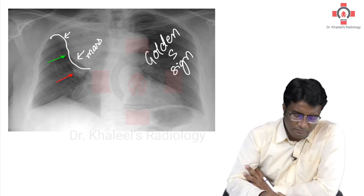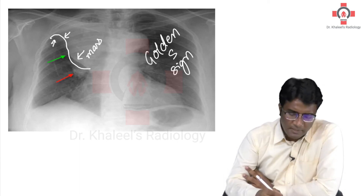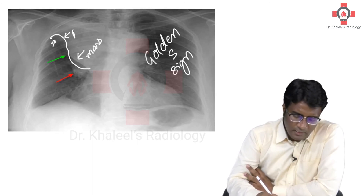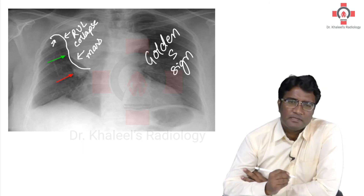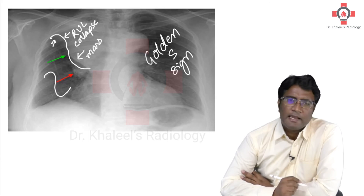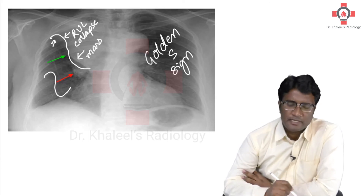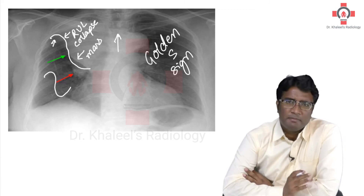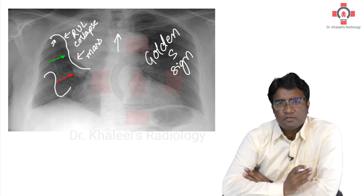The fissure also got lifted up. So you have this concave upward part because of the right upper lobe atelectasis or collapse, and the lower convex part because of the mass. This is a Golden S sign, which is actually a reverse S sign. Had it been only a right upper lobe collapse, the trachea would have shifted to the same side. But as you can see, the trachea is in the midline — the mass is preventing any tracheal shift. So this is the Golden S sign.